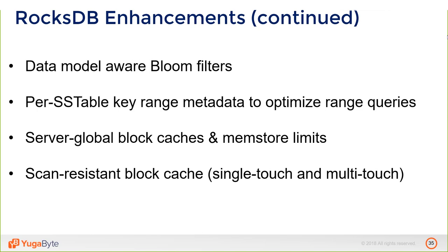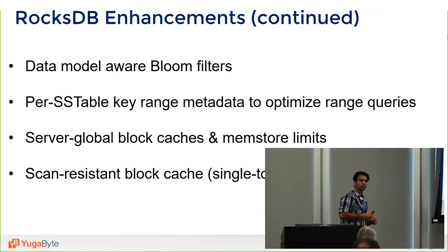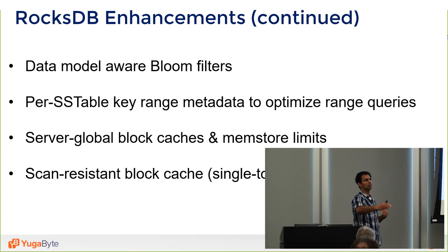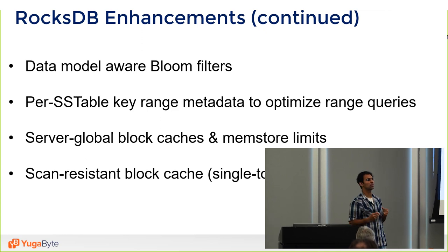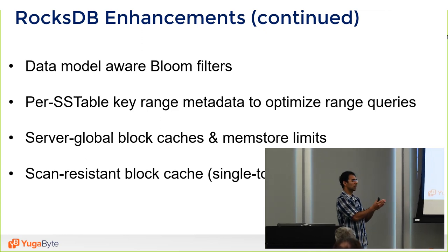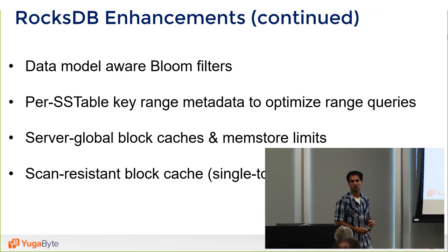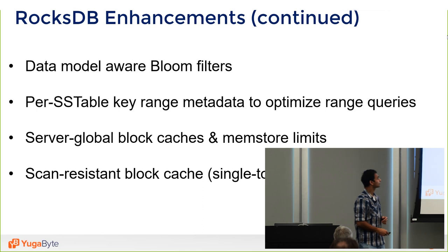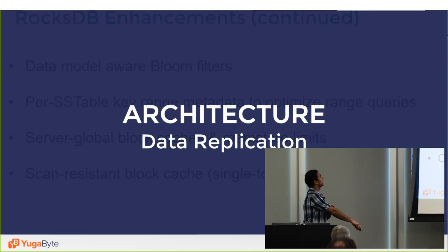Additional RocksDB enhancements include: making Bloom filters efficient for the document data model it's on top of, making the block cache and mem store global across different RocksDB instances instead of sizing each independently, and a scan-resistant cache for workloads that sometimes read a lot of old data but frequently read recent data.